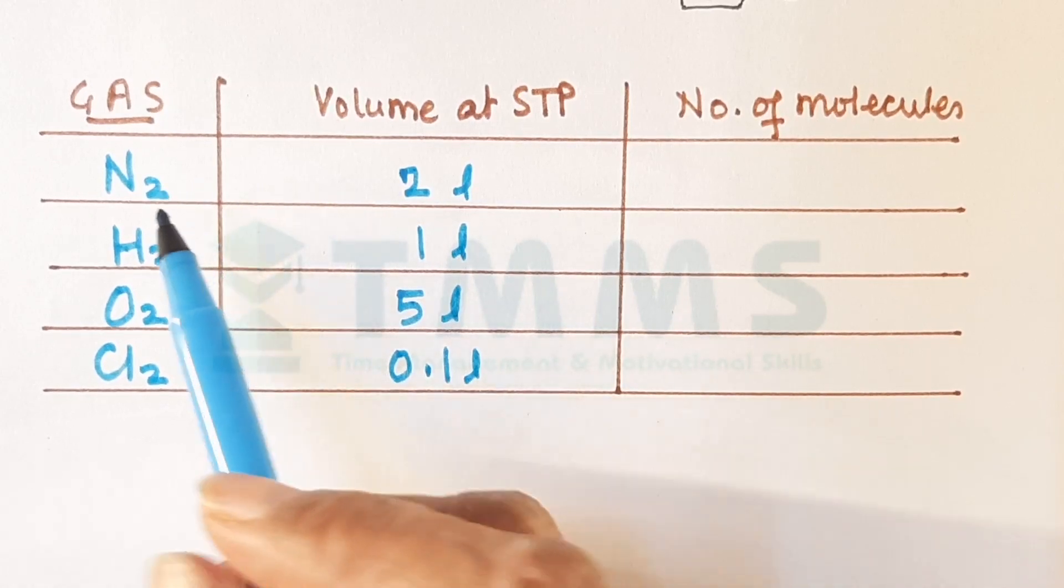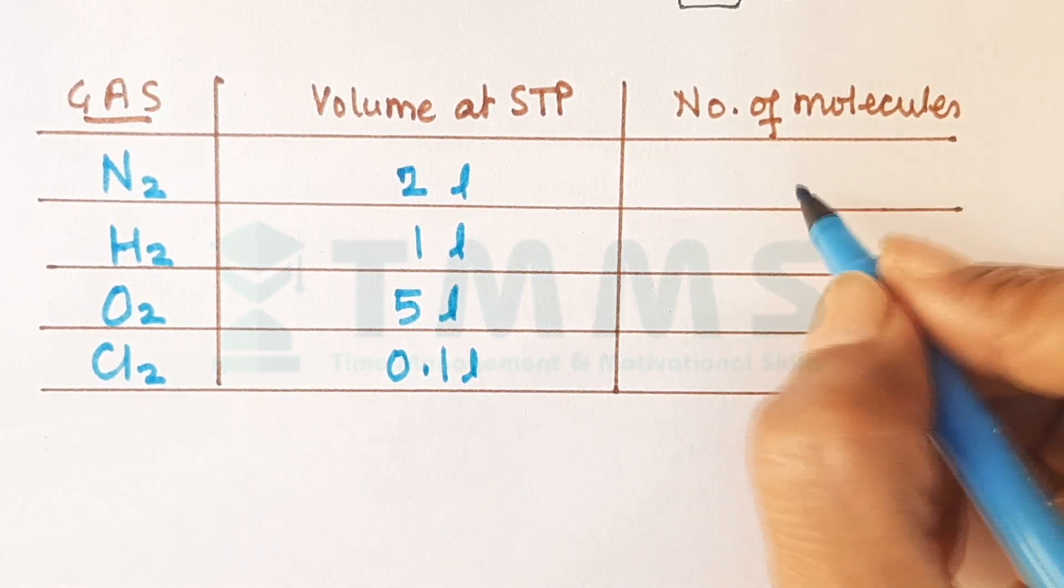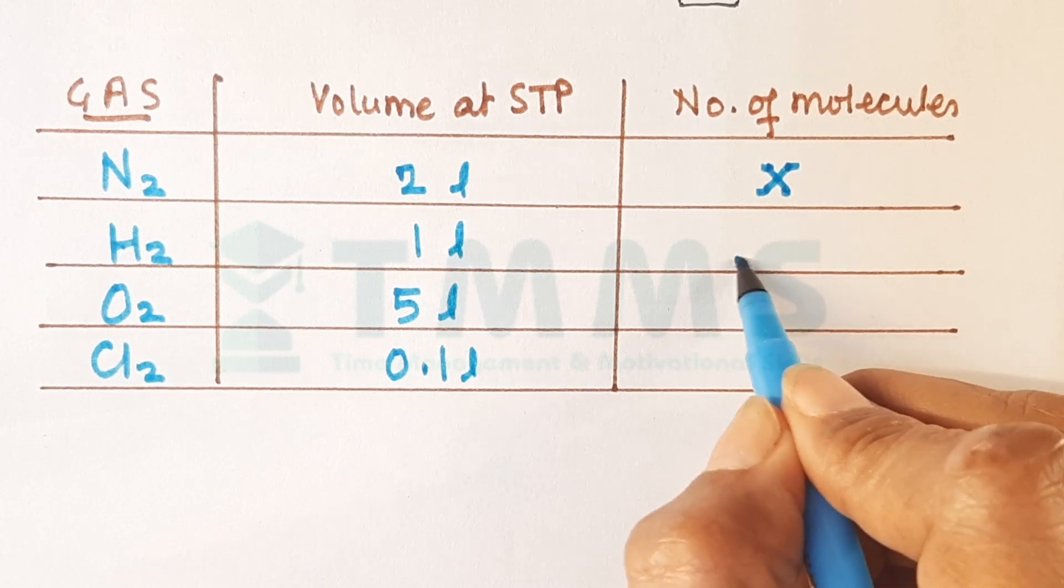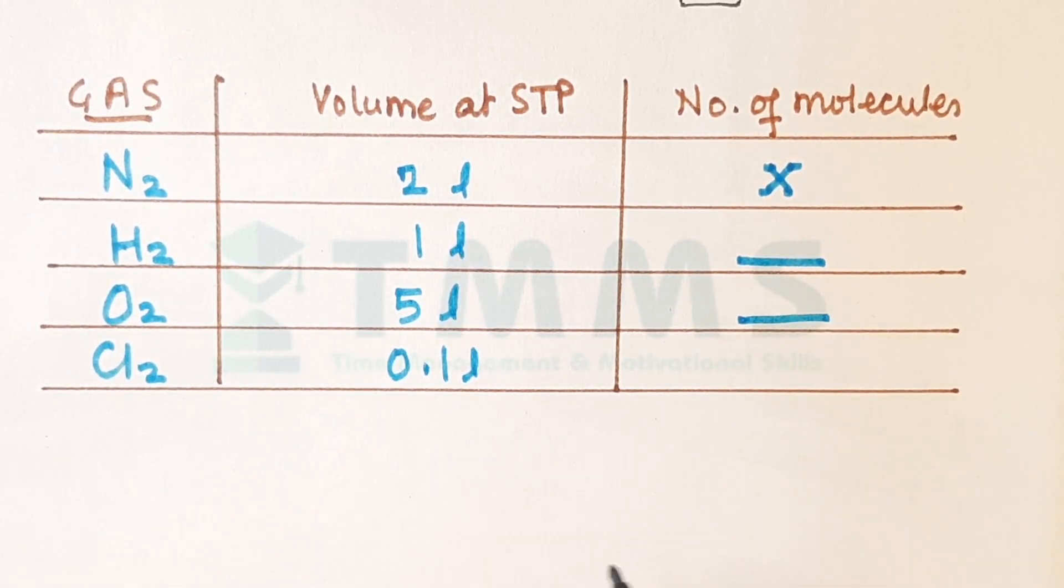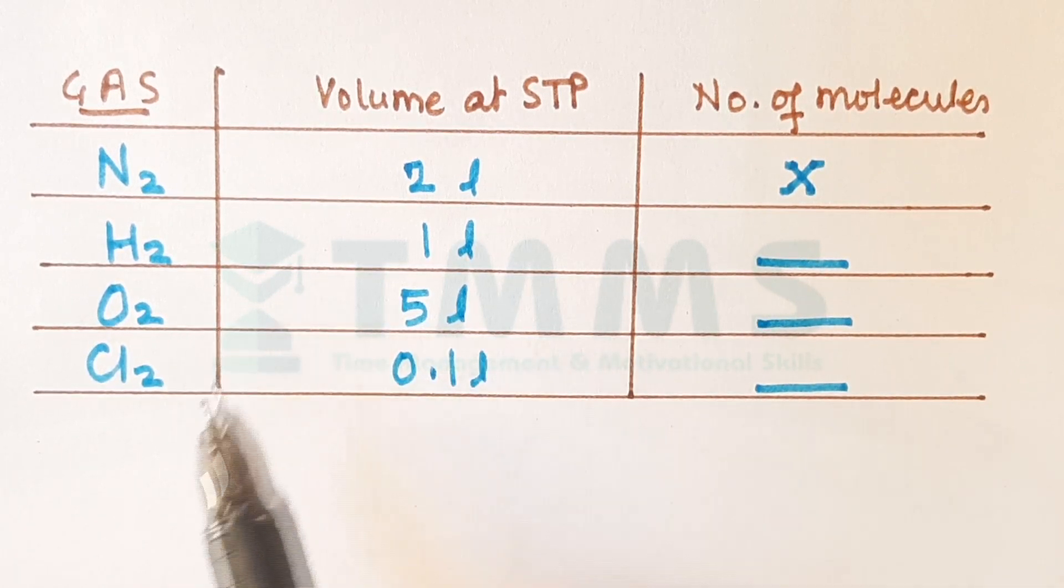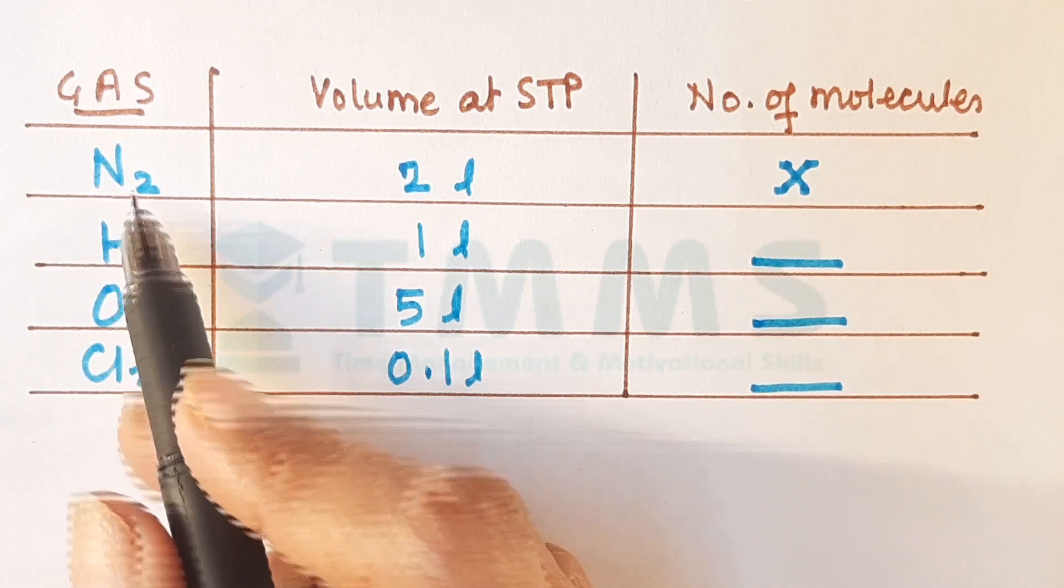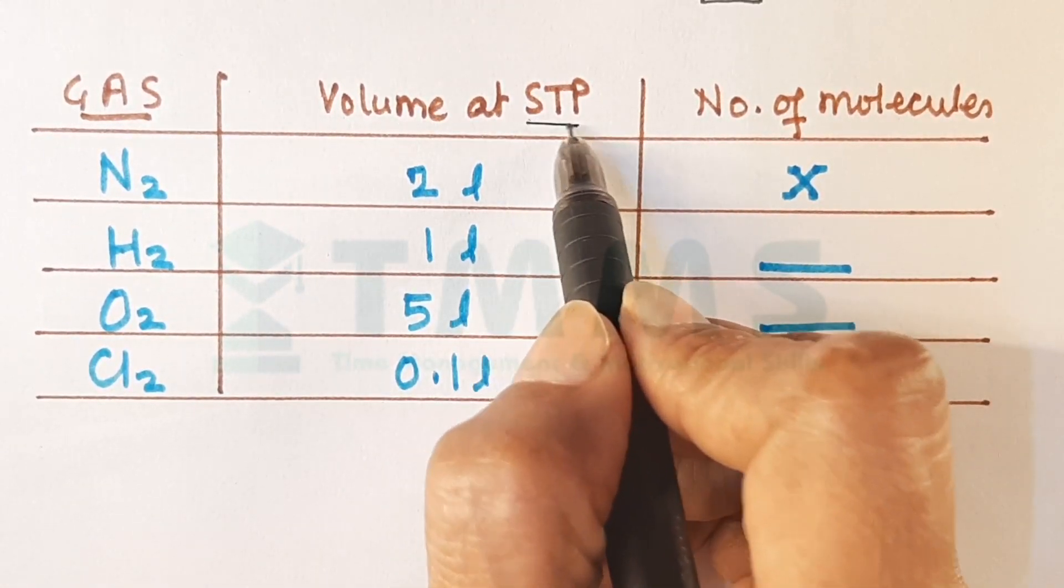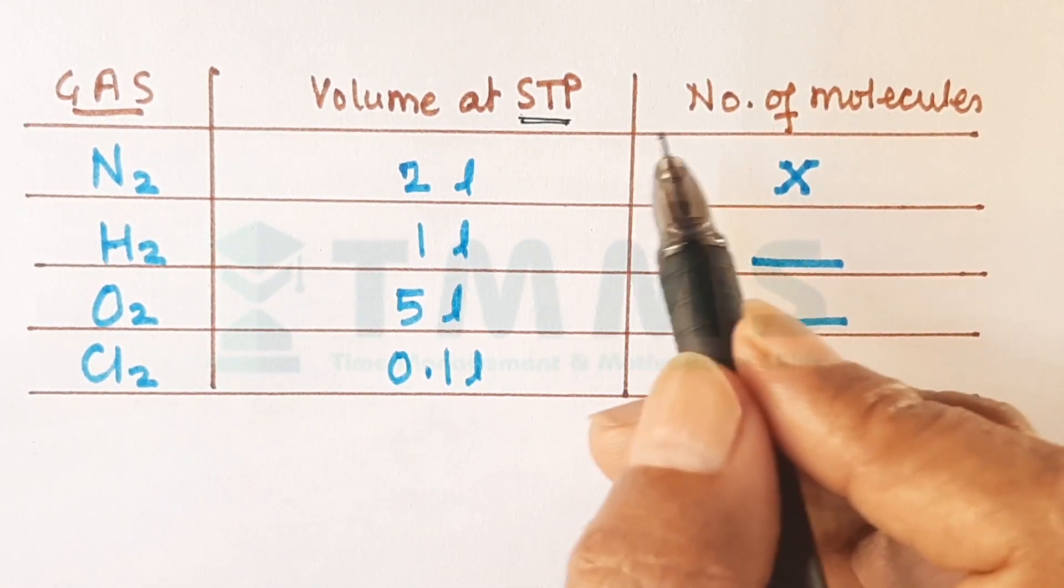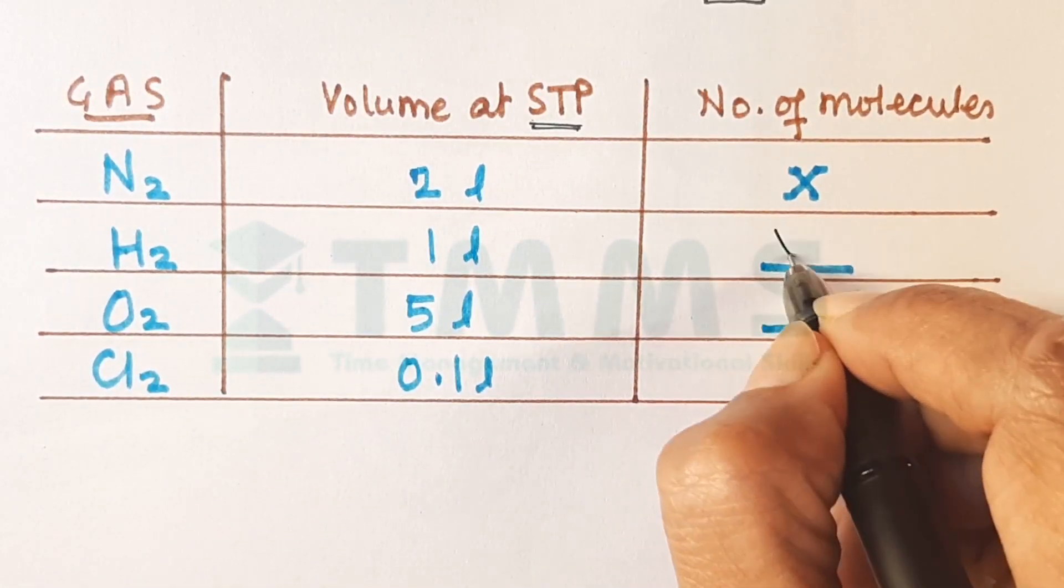Let us see now how do we use this to answer the questions based on this. In a question like this where you are given different gases and their volumes and you are told that this nitrogen has x number of molecules and they are asking you to find number of molecules in H2, number of molecules in oxygen, number of molecules in chlorine. The one important tip over here is to look at the volumes and find the number corresponding to one volume. Now you have been given number of gases here. All of them are at STP. What does STP mean? Standard temperature pressure which means the condition of temperature and pressure is the same for each one of them.